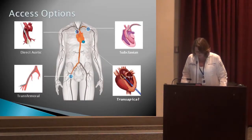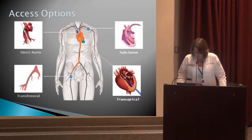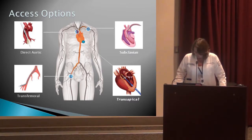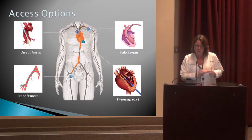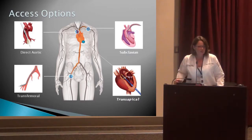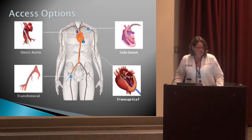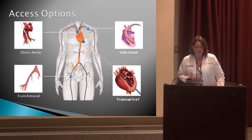Access options for TAVR include direct aortic (transaortic), transfemoral, and transapical — which goes through the bottom into the left ventricle, through the ribs and muscles, and tends to be more painful for patients. We haven't yet performed a subclavian approach but can do it. Most of our patients when we first started were either transaortic or transapical.